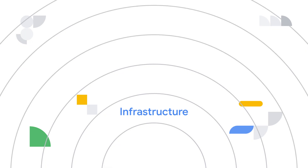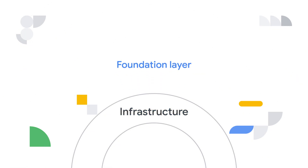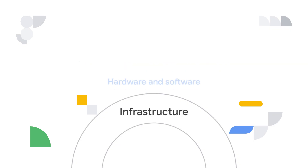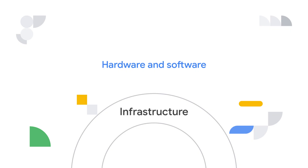The infrastructure layer is the foundation upon which everything else rests. It provides the core computing resources needed for generative AI. This includes the physical hardware, like servers, GPUs, and TPUs, and the software needed to store and run AI models and training data.